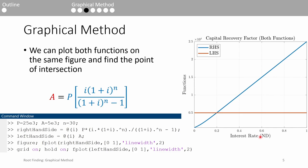When we plot it, we have two choices. First, we can plot both the left-hand side and the right-hand side as individual functions on the same graph. The point of intersection is our answer. I threw in some dummy parameters into MATLAB here and plotted both sides of the capital recovery factor equation. The lines cross at just about 0.2, so it looks like our interest rate is about 20%.